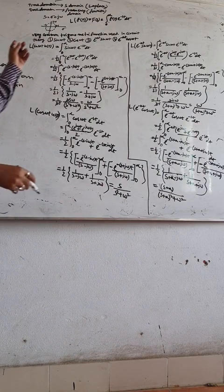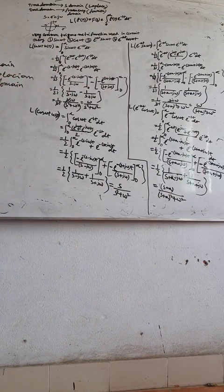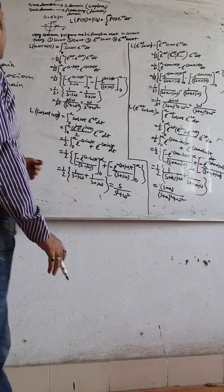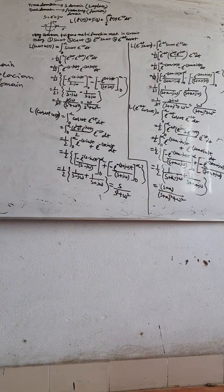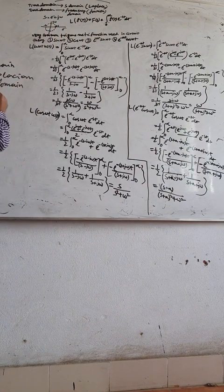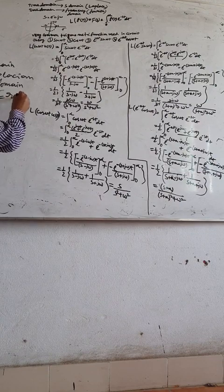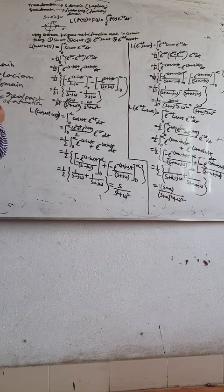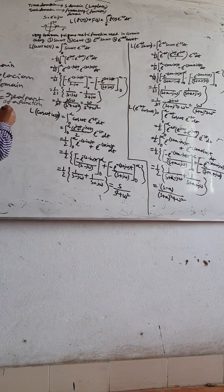Time domain to frequency domain conversion happens in Fourier transform. Time domain to s-domain transformation happens in Laplace transform. What is s? s means sigma plus j omega, where sigma is the real part of the function and j omega is the imaginary part.